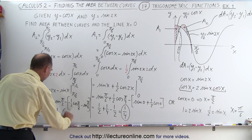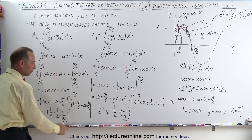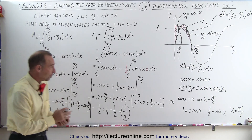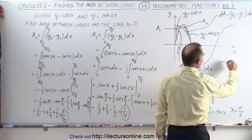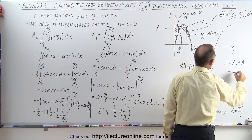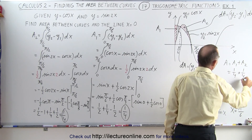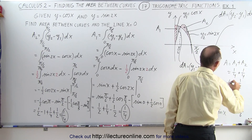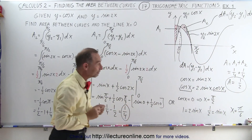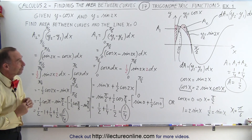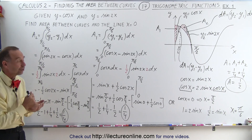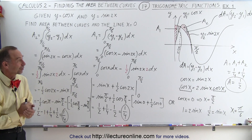Interestingly, A1 and A2 are equal in size, both equal to one quarter. The total area A equals A1 plus A2, which is one quarter plus one quarter, equal to one half. So the total area of both regions combined is one half, and that's how it's done using trigonometric functions.